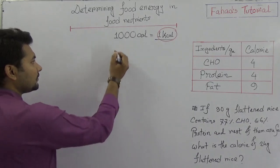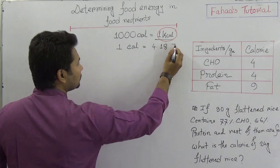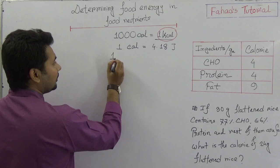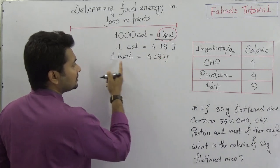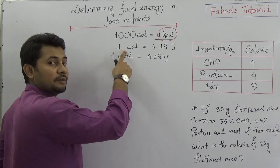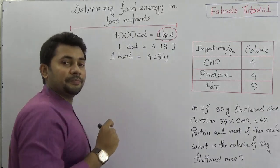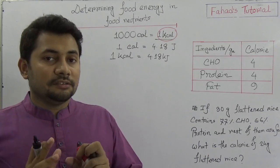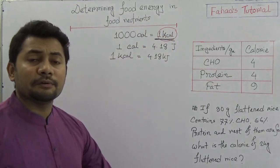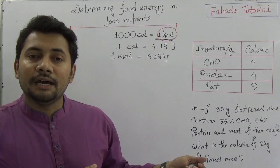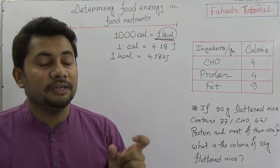One calorie is 4.18 joules. So one kilocalorie is actually 4.18 kilojoules — I just multiplied by one thousand in both cases. So kilocalorie or kilojoule are the units of food energy we need to understand. If a question asks for food energy in joules, we can convert from calorie to joule by multiplying by 4.18.